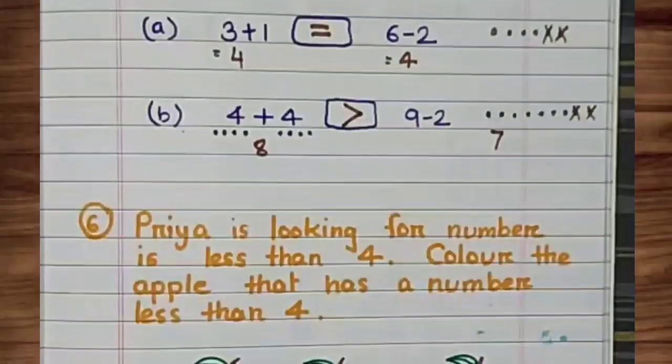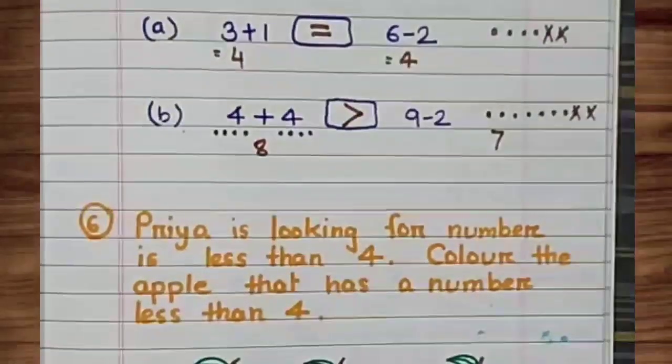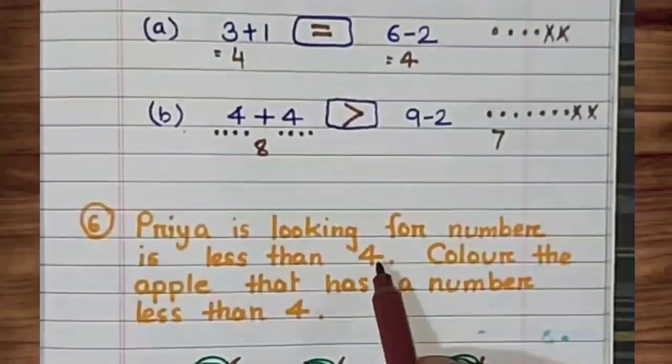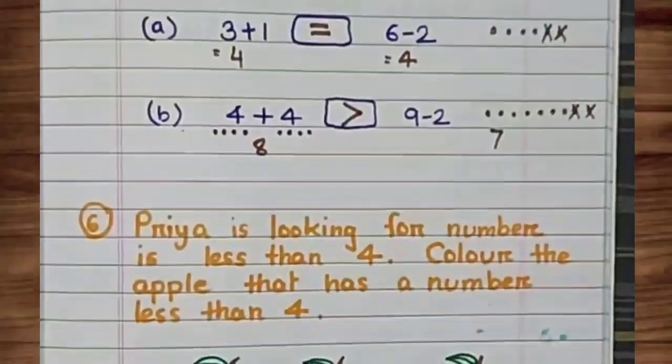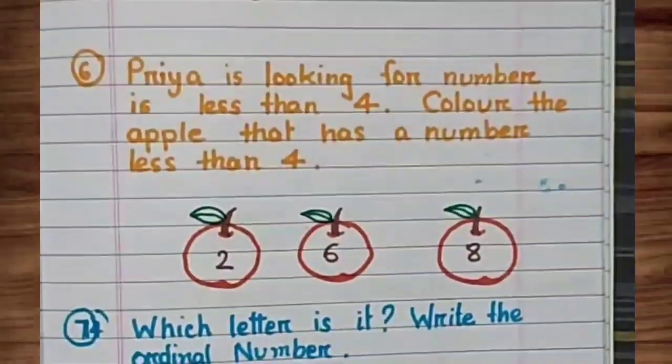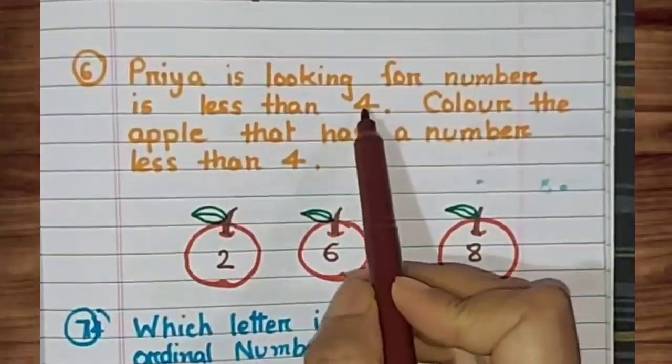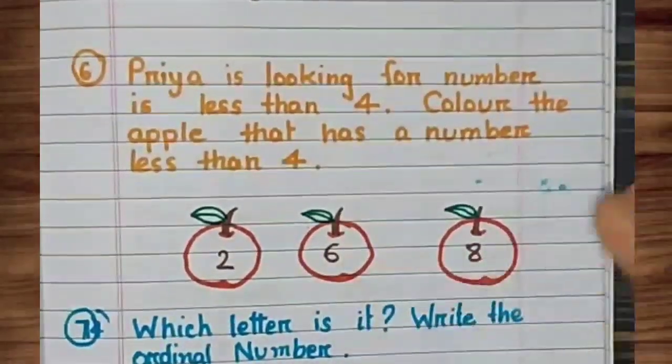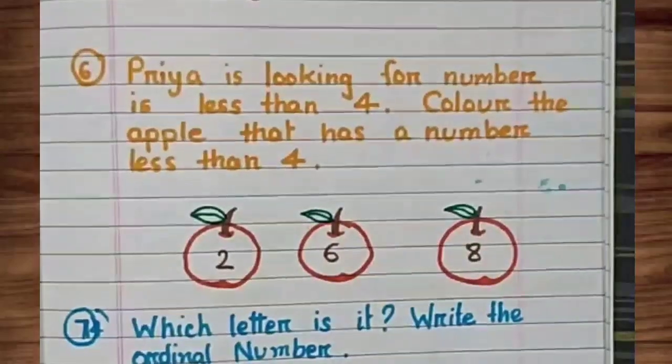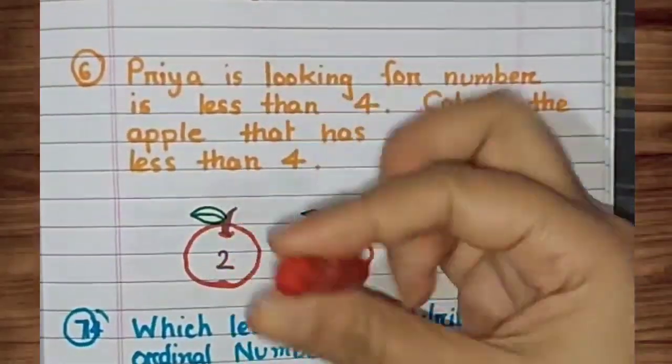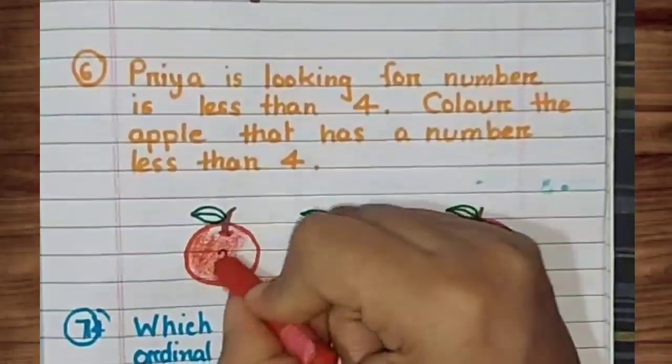Priya is looking for a number less than 4. Color the apple that has a number less than 4. What is the number less than 4? It is 1, 2, 3. But here number 2 is present. The remaining numbers 6 and 8 are greater than 4. So we color the number 2 apple.